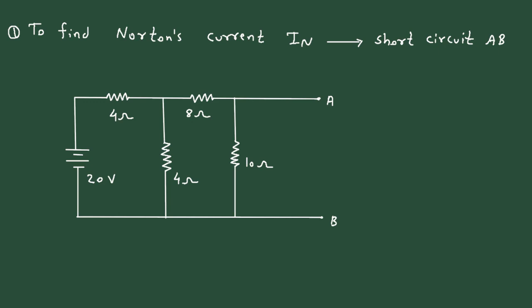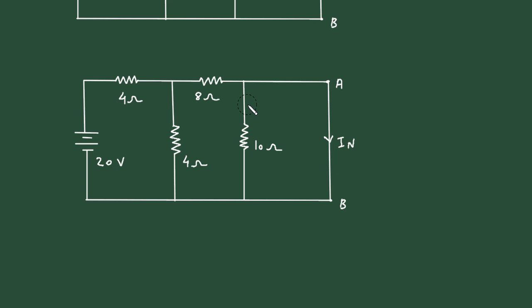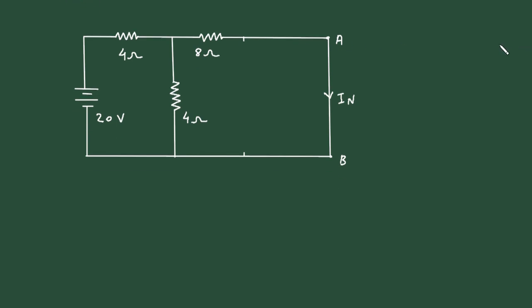Now, if we short circuit terminal AB, then this will be our current IN. We can see that if we short circuit terminal AB, this 10 ohm resistor will be zero. So we can remove this 10 ohm from the circuit. IN is the current flowing through this 8 ohm.